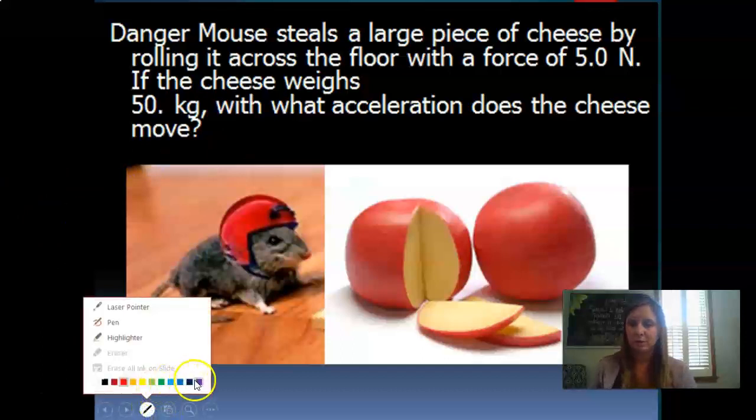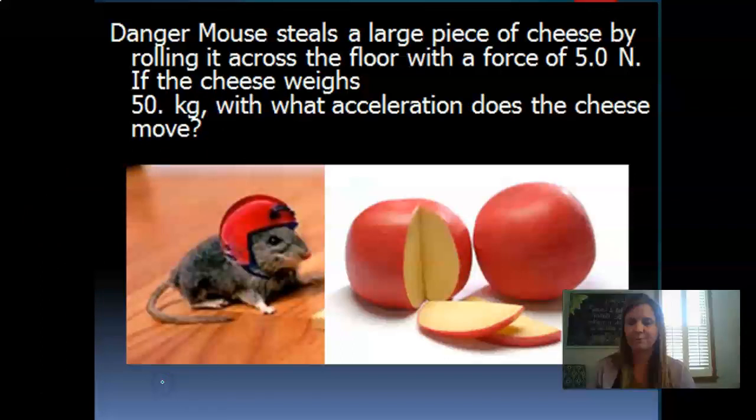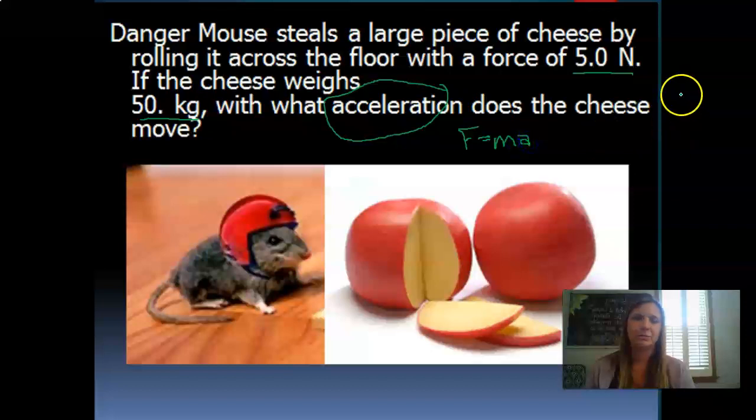Let's take a look at how to set up one of our equations. This here is Danger Mouse, very clever name. He steals a large piece of cheese by rolling it across the floor with a force of 5 newtons. That's an important piece of information—that's our force. If the cheese weighs 50 kilograms, there's its mass. What is the acceleration? So there's our question. Our equation is F equals mass times acceleration.